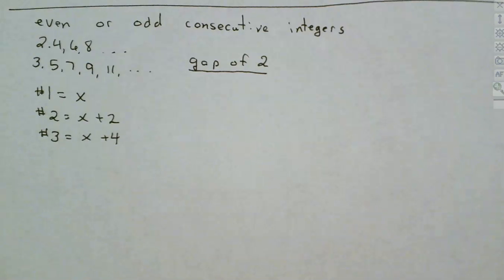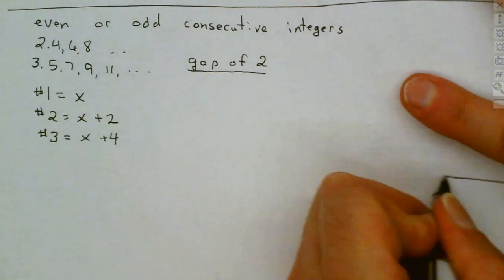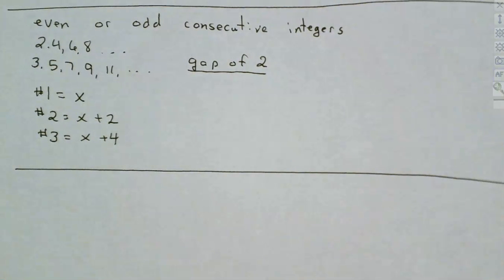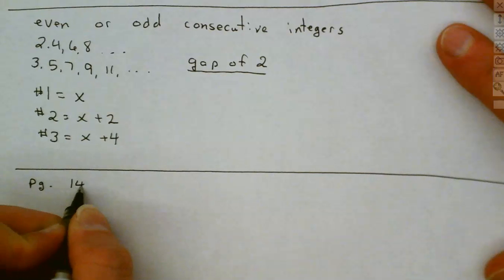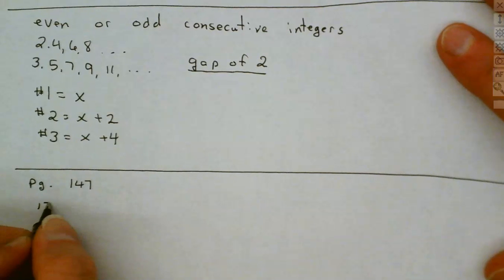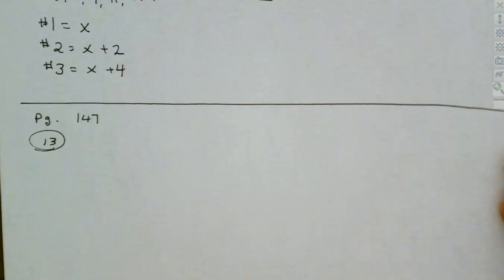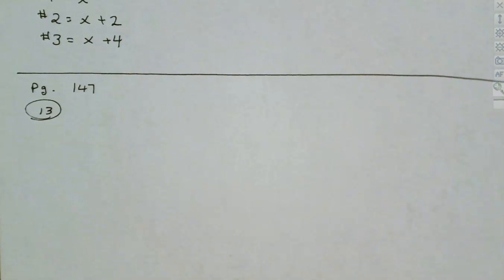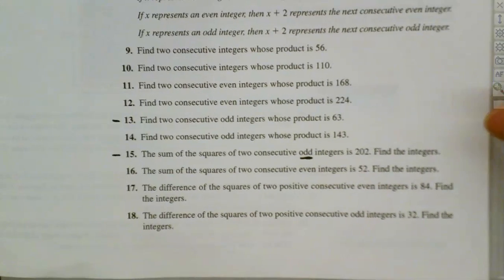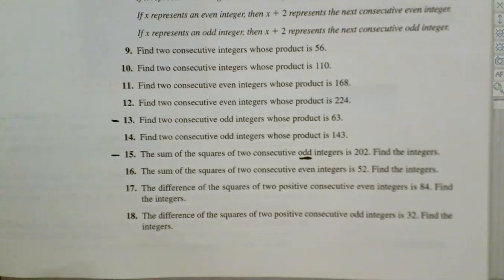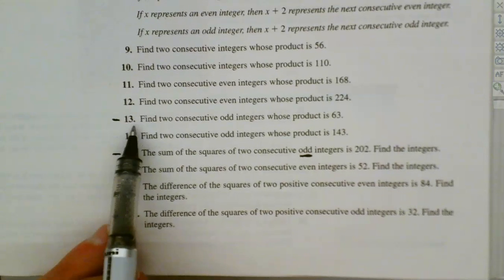We're going to do a couple of these questions — they're very easy to set up. We'll do question 13 and question 15, on page 147. These are much easier to set up than the ones from 1.2.